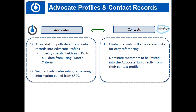When Influitive finds that person in Salesforce, they're also going to pass over what's called advocacy activity. Depending on whether you set this element of the integration up on your Salesforce side, there's a section you can add to the contact record called advocacy activities. That section pulls a list of all the different activities your advocate has done in the Advocate Hub — whether it's filled out a survey, completed a reference call, tweeted, or submitted a referral.